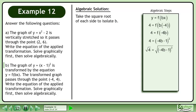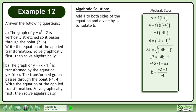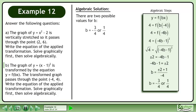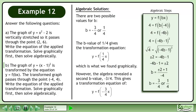Take the square root of each side to isolate b. The square root of 4 is plus or minus 2. Rewrite the equation with b on the left side. Add 1 to both sides of the equation and divide by negative 4 to isolate b. There are two possible values for b: negative 3 over 4, or 1 over 4. The b value of 1 over 4 gives the transformation equation y equals f(x/4), which is what we found graphically. However, algebra revealed a second b value, negative 3 over 4, giving the transformation equation y equals f(negative 3x/4).